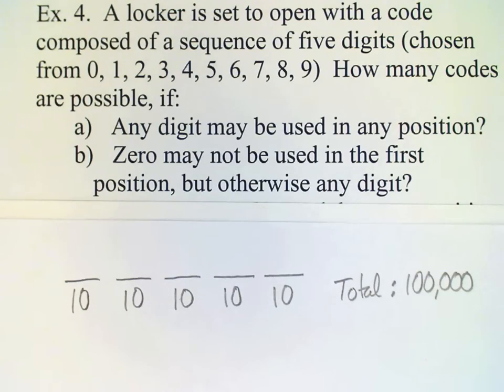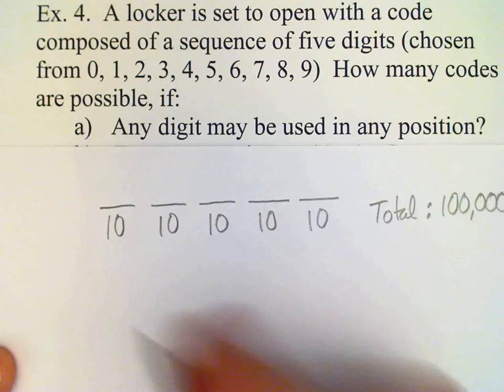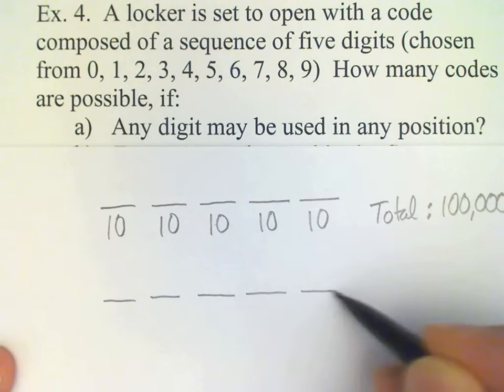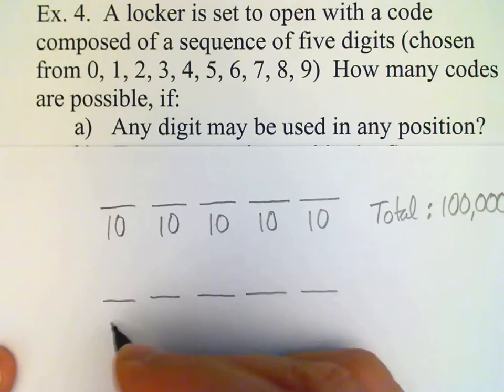Now let's see what happens if we have a restriction. Part b says zero may not be used in the first position, but otherwise any digit is okay. So just one little restriction - cannot use zero in the first position. So again we have five slots to fill, only now zero cannot be used in the first position. That reduces our number of possibilities from ten to nine for that position.